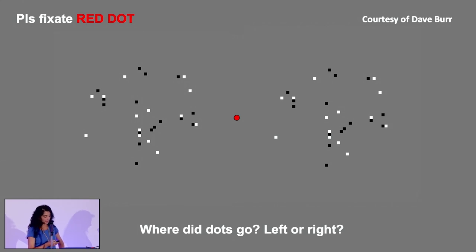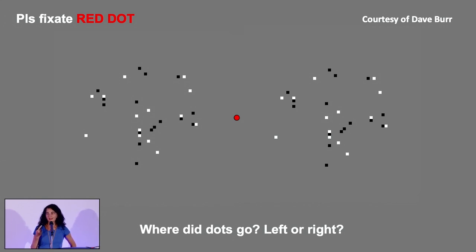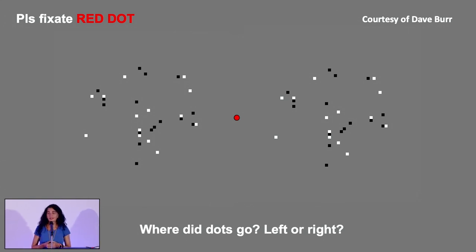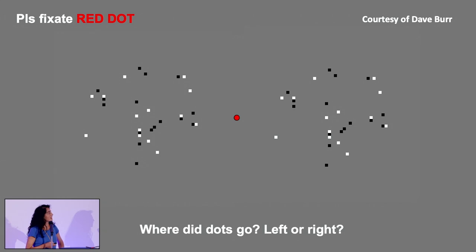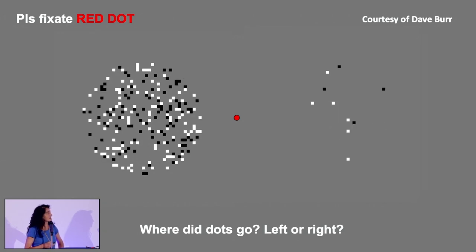The reason why it is important to fixate the red dot is because of saccades. This is the trick that our beautiful visual system plays to have highly defined vision even using only part of the fovea — a really beautiful property. This is a perceptual mechanism.